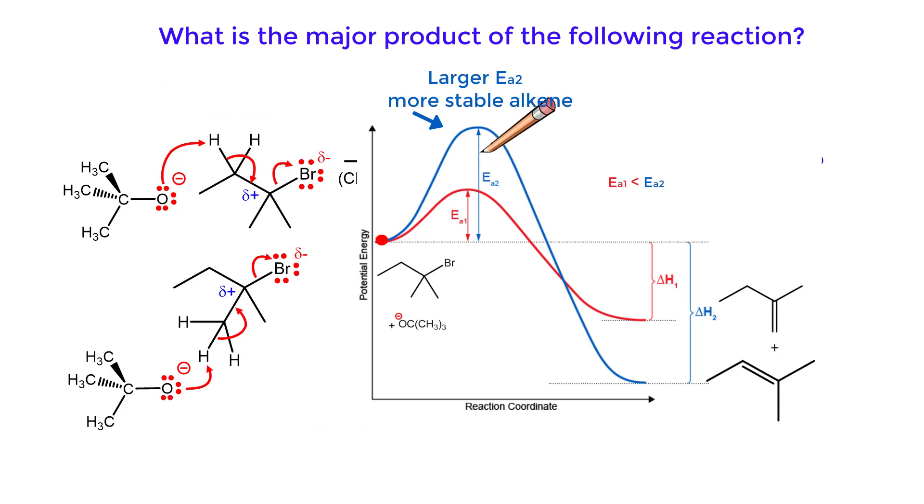The energy of the transition state that produces the more thermodynamically stable alkene is greater than the transition state that produces the less stable alkene. A larger activation energy decreases the rate of reaction and causes the more stable alkene to become a minor product.